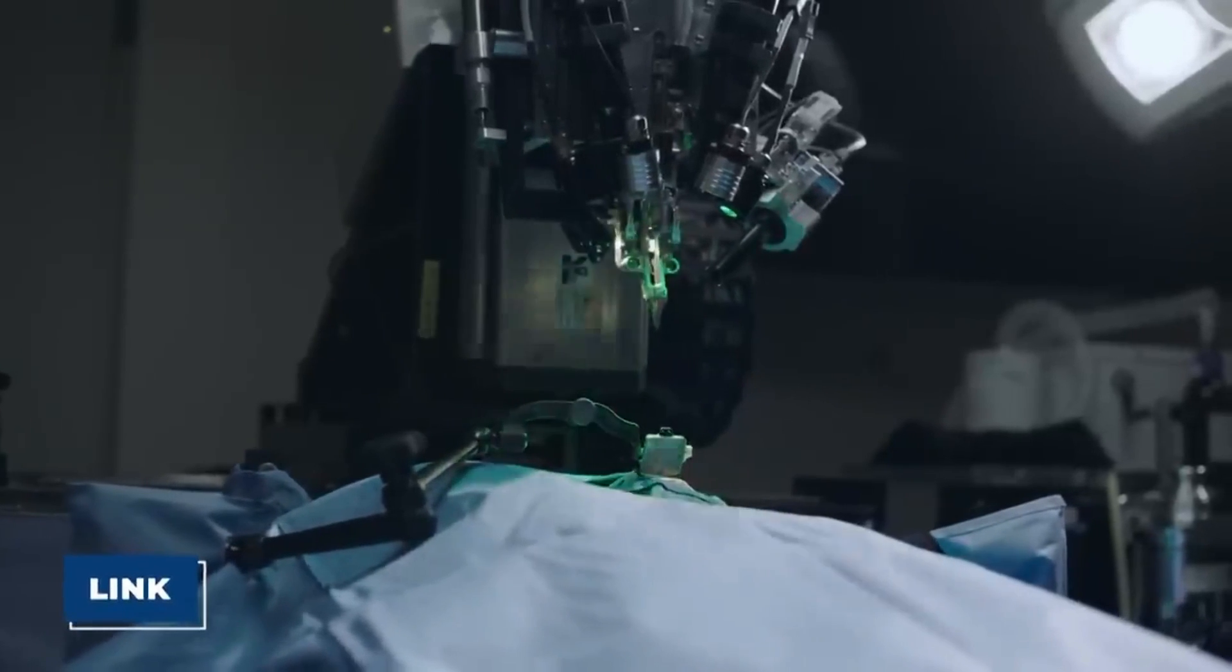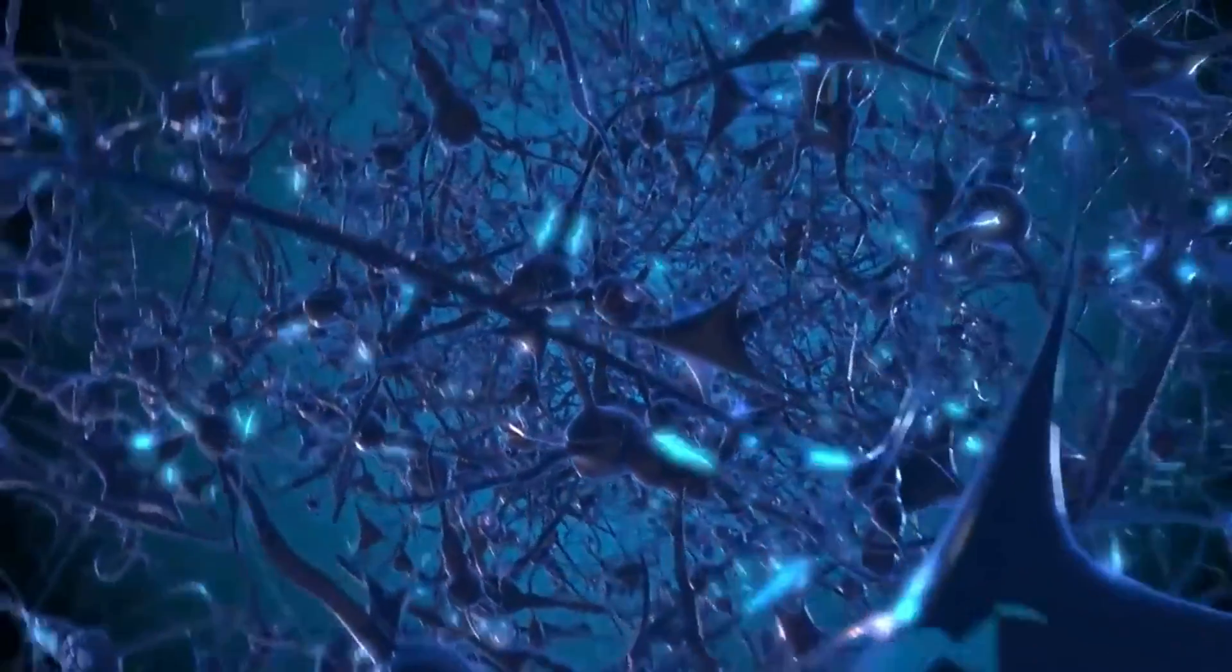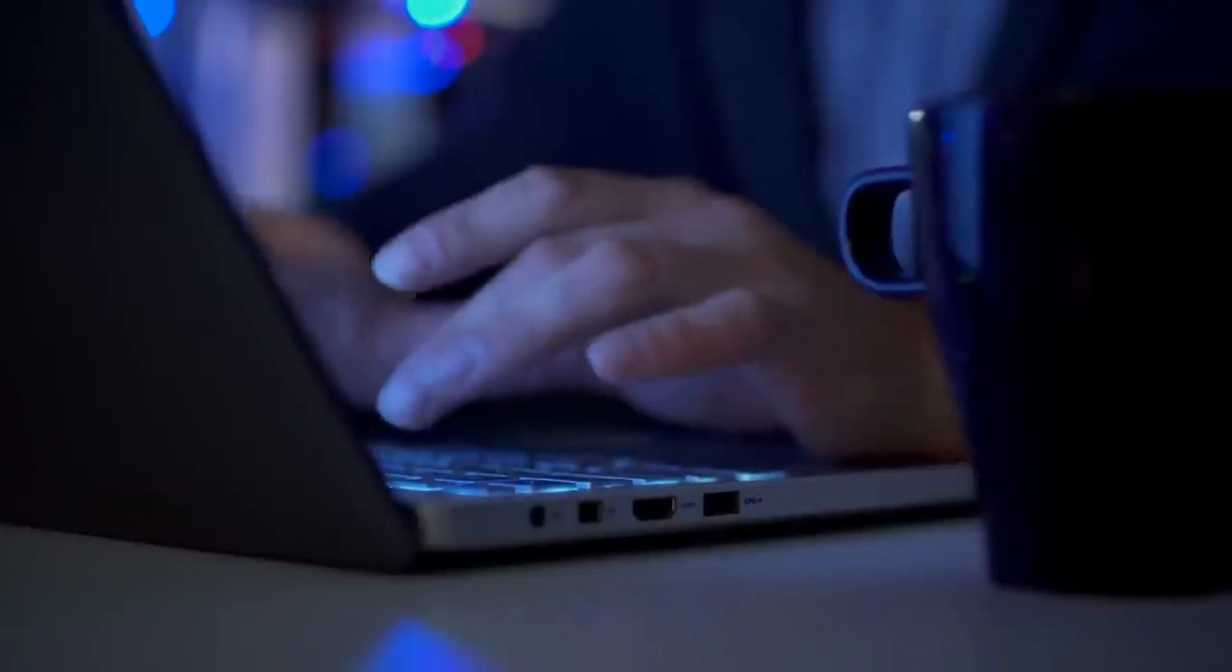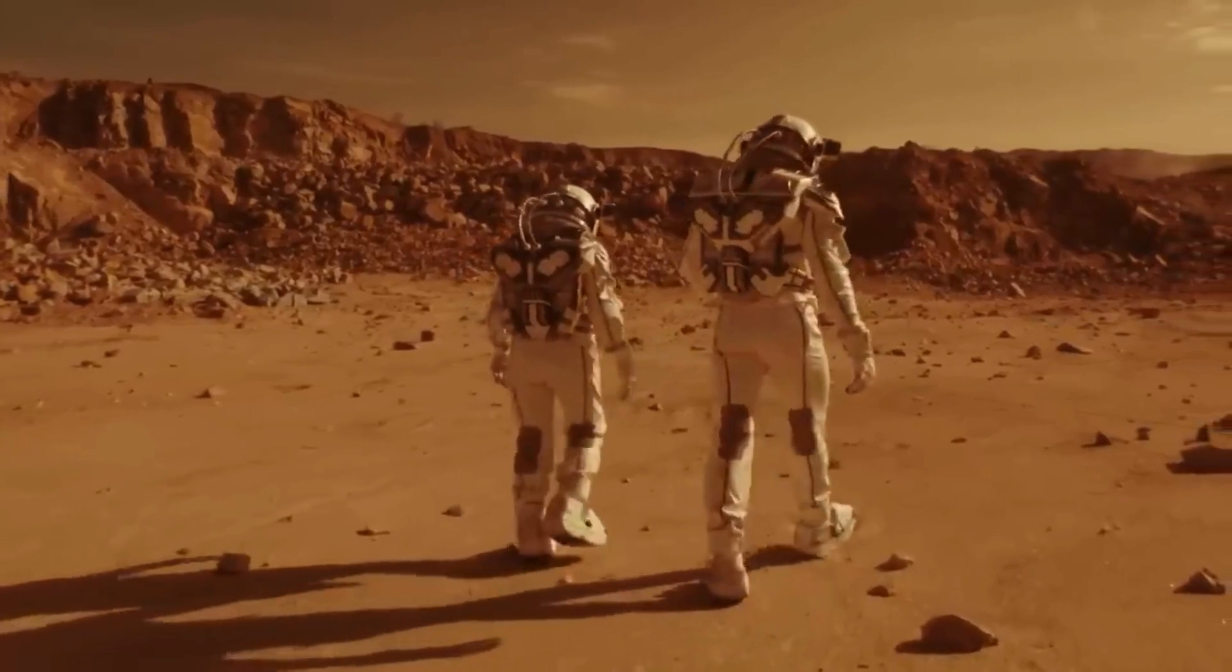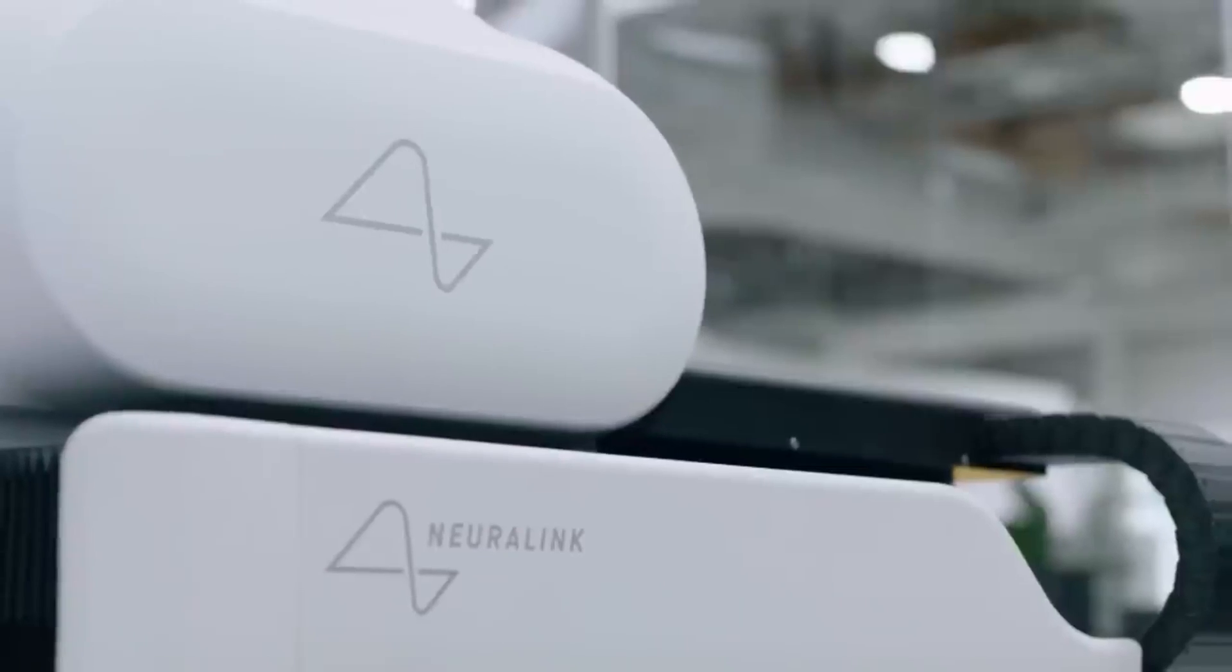Let's start with the technology that powers Neuralink. BMIs from the company consist of a tiny chip implanted into the brain as well as a series of electrodes capable of recording the activity of individual neurons. The chip is linked to an external device, allowing the user to control external devices or receive sensory input.